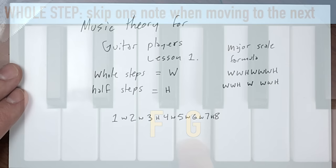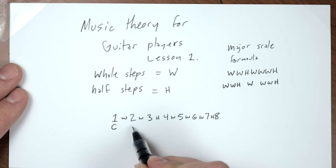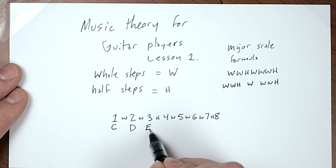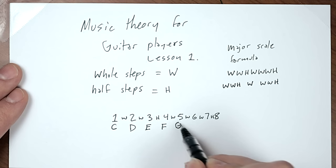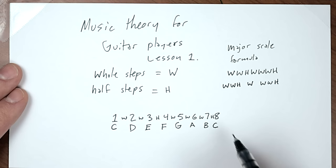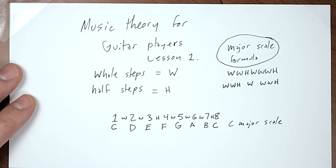When making a scale, you start on a note. Let's pick C. Starting on C and moving a whole step gets us to D. Another whole step gets to E. A half step gets to F. Then whole step, whole step, whole step, and a half step — and this is now the C major scale.